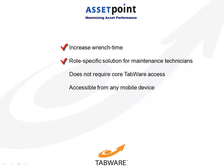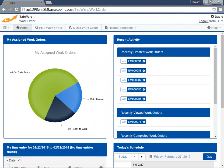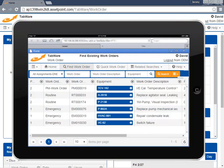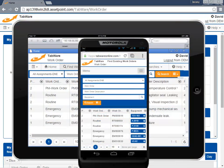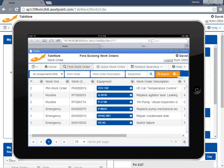Tabware Technician provides role-specific, streamlined access to work management without the requirement of a seat or license for the full Tabware solution. Tabware Technician is accessible in an HTML5-supported browser. This technology enables the Technician app to recognize the device type — whether laptop, tablet, or smartphone — and tune the app to suit the device.